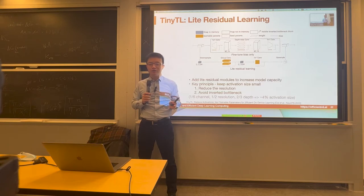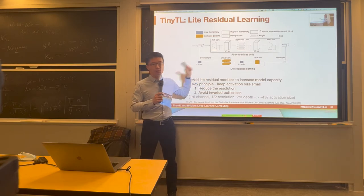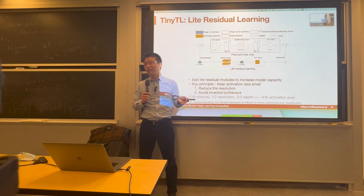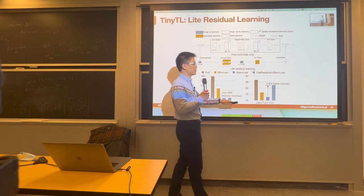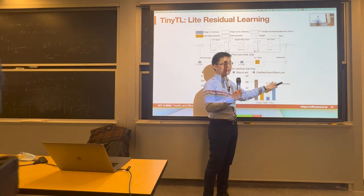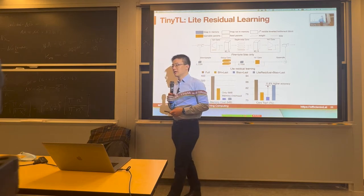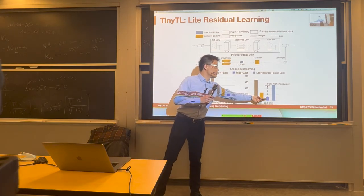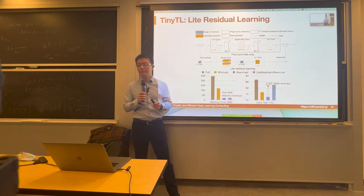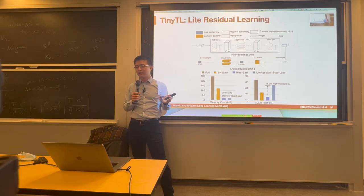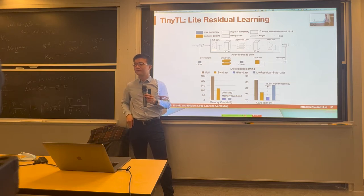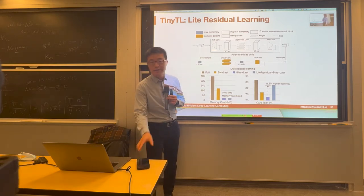We can now recover accuracy by a large margin, compared with both fine-tuning batch norm and fine-tuning the bias only. Conventional models like MobileNet and ResNet are designed for inference efficiency, while these are the principles for training efficiency and fine-tuning efficiency. Any questions for bias-only update and the light residual learning? Good, we are on the same page.